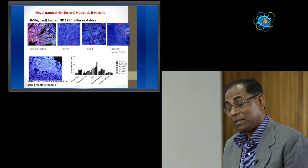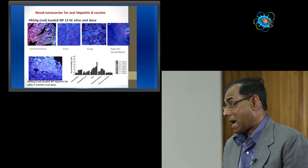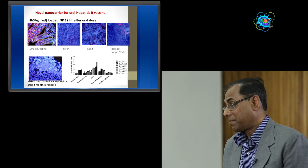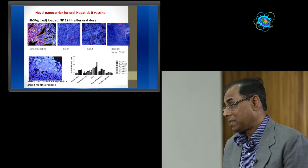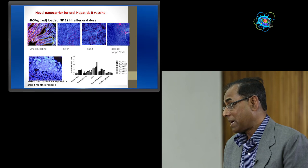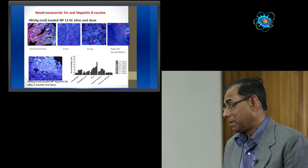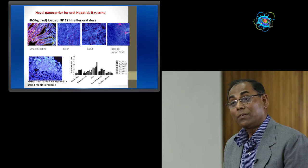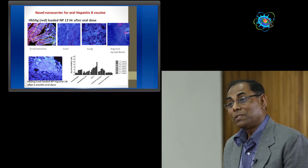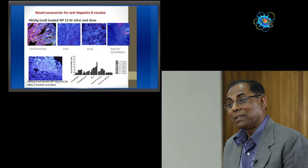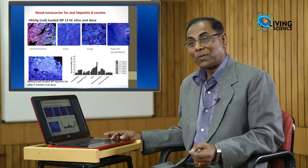After that, another interesting thing we realized is that it can be given orally. Now we have developed a hepatitis B oral viral vaccine, which we are trying in rats, mice, and guinea pigs. This is the data you can see. After giving them orally, these are loaded in the macrophages present in the intestinal villi. After 12 hours, these particles we can pick up in the liver, in the lungs, and in the inguinal lymph nodes.